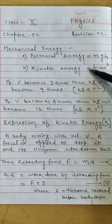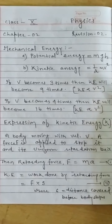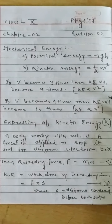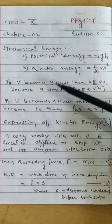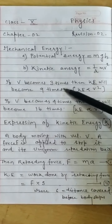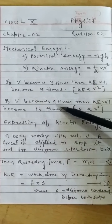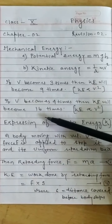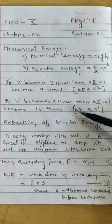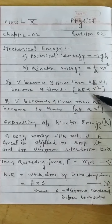Kinetic energy is directly proportional to the square of velocity. If the velocity of the body is doubled, then its kinetic energy becomes four times. When velocity becomes three times, kinetic energy becomes nine times. When velocity becomes four times, kinetic energy becomes 16 times — because kinetic energy is directly proportional to the square of velocity.